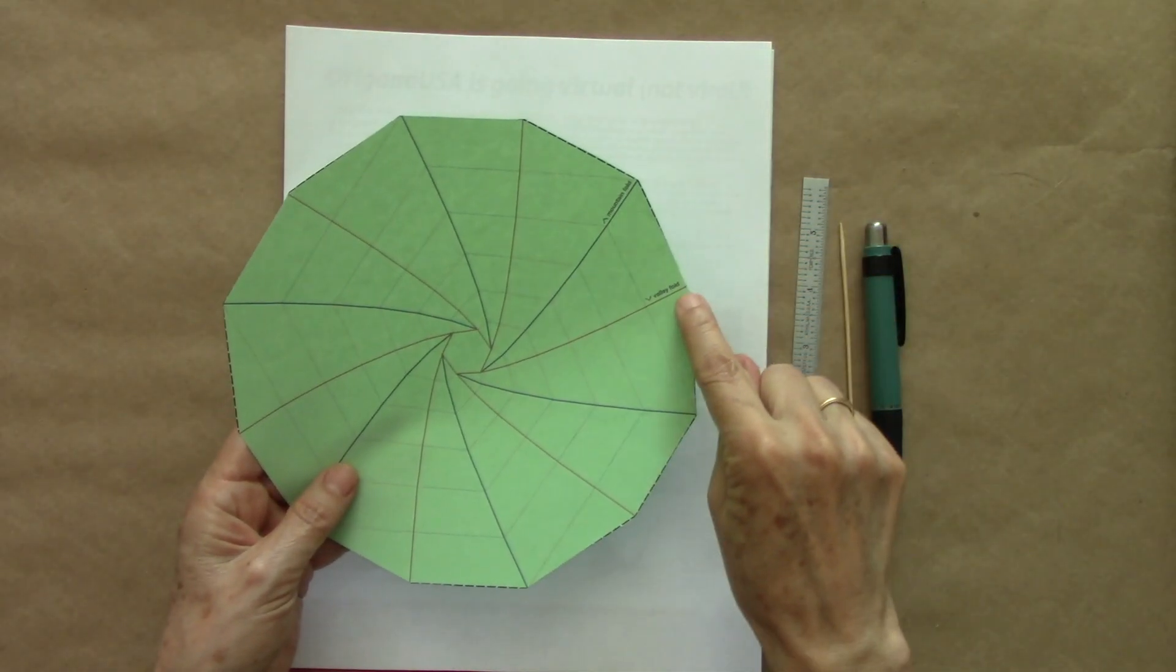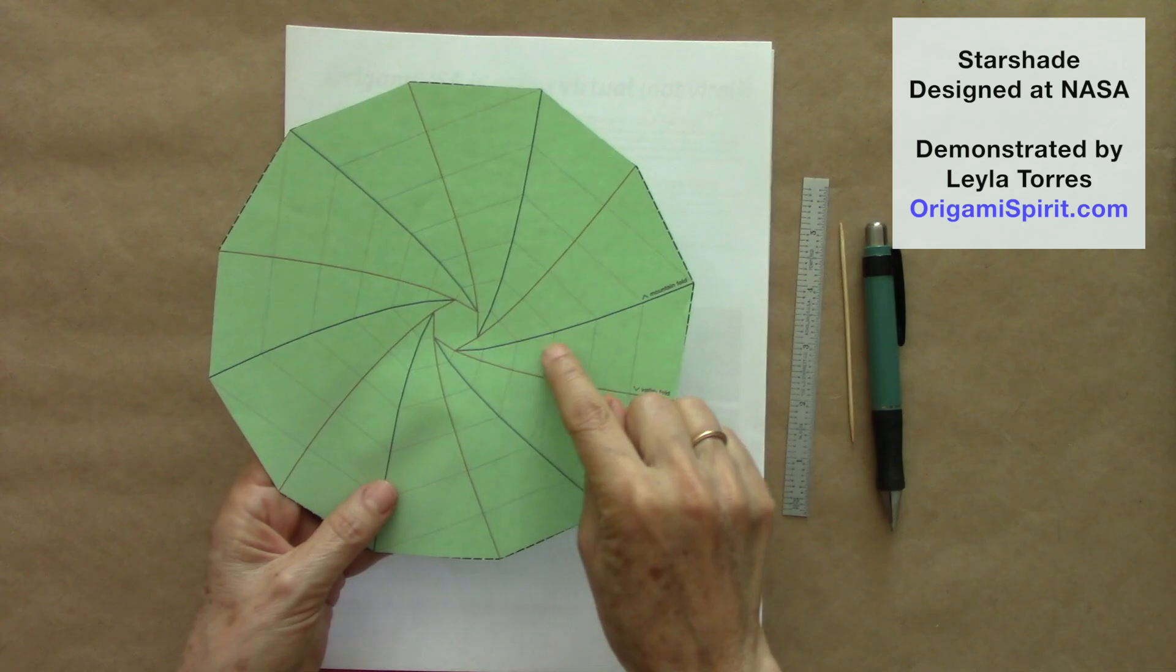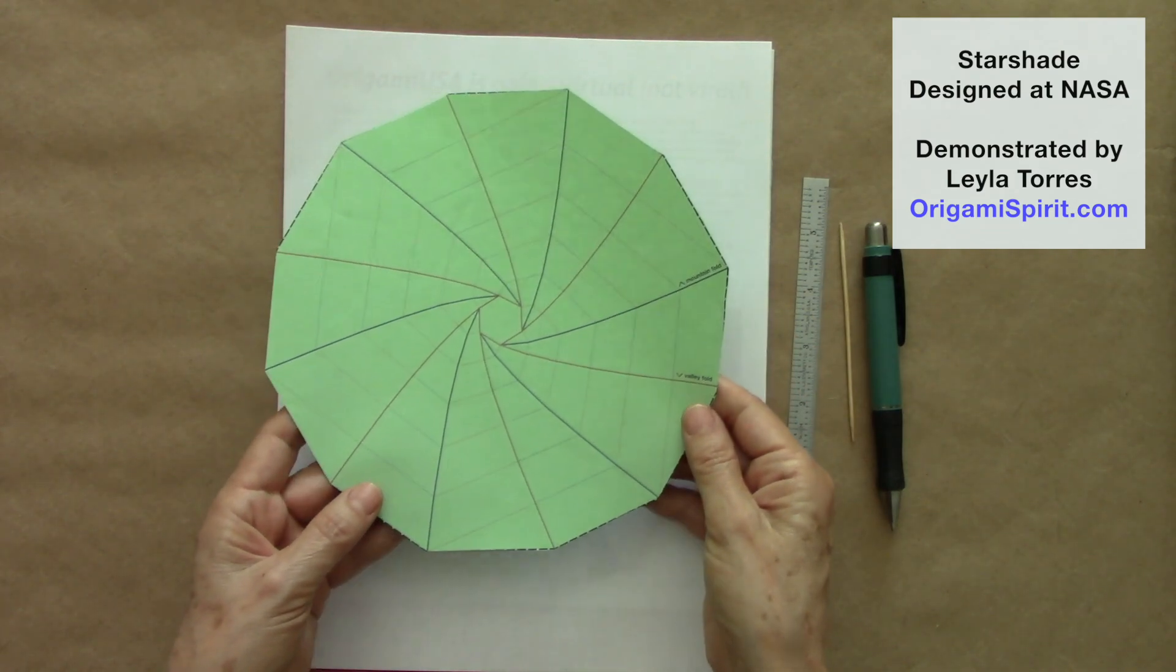The red lines will be valley folds, and the blue lines will be mountain folds.